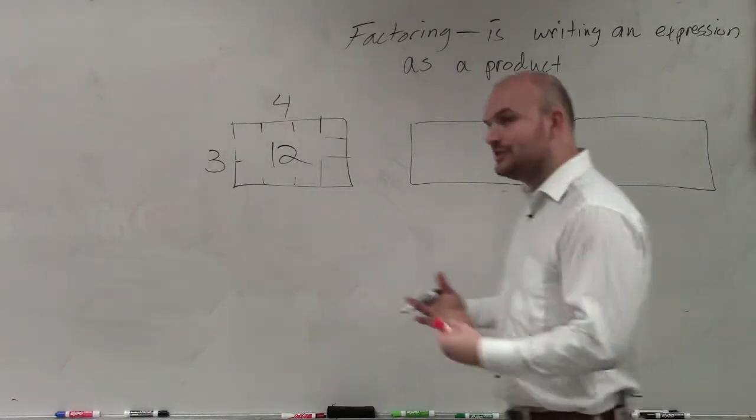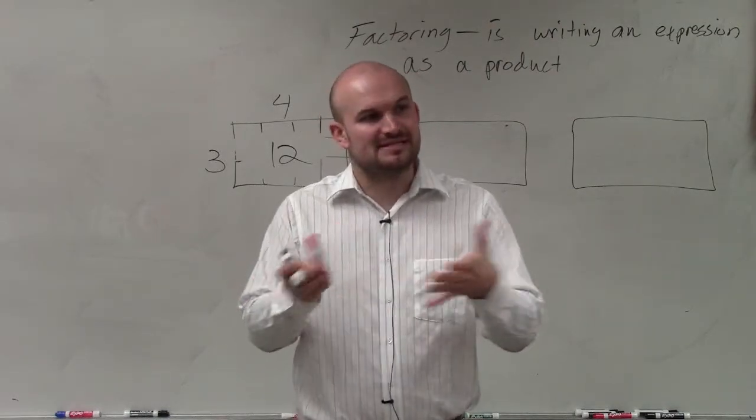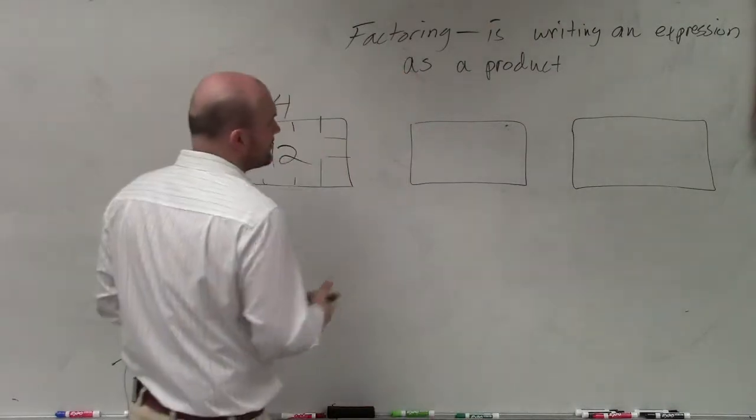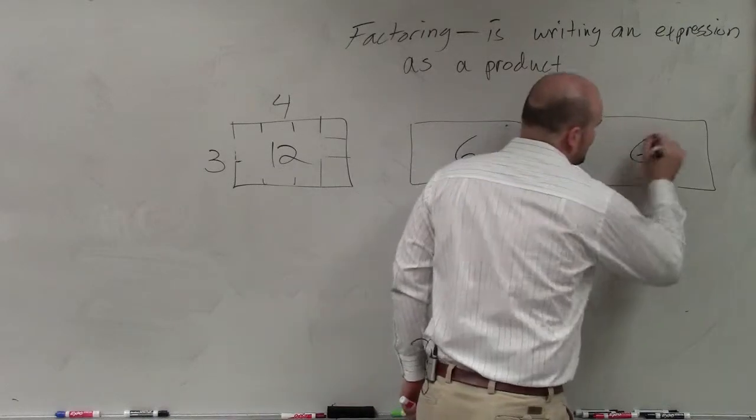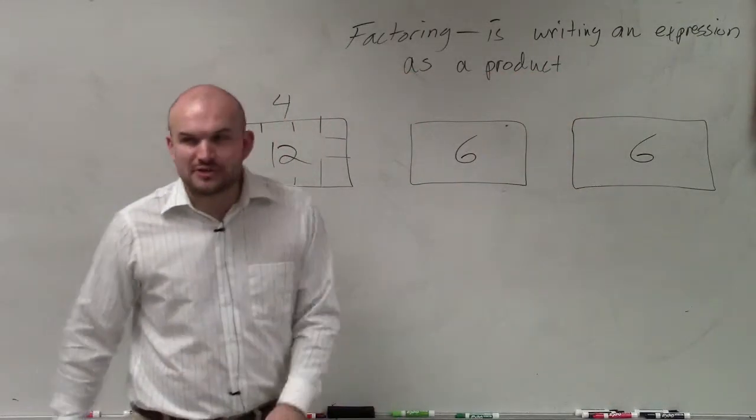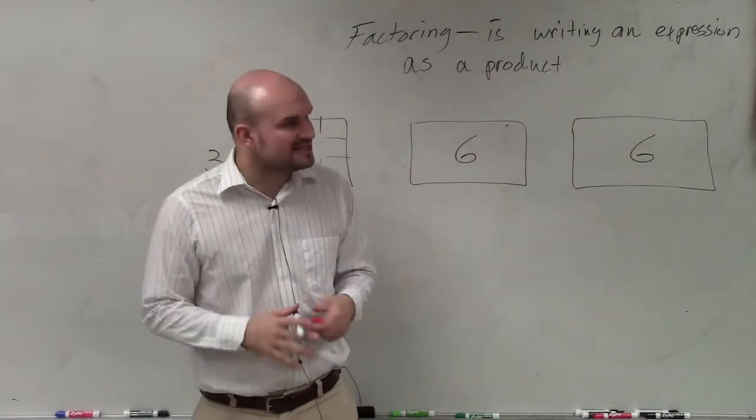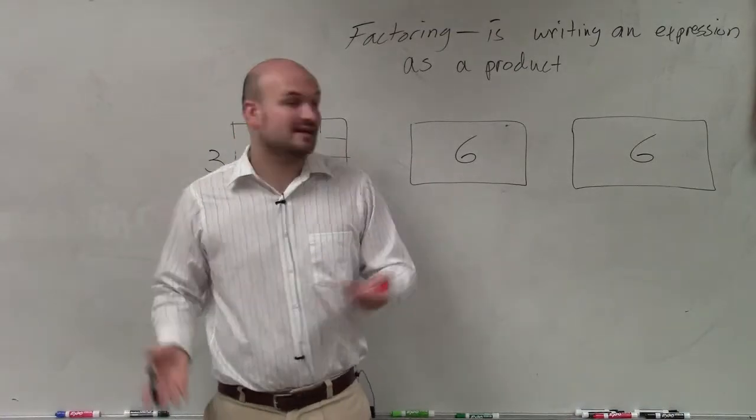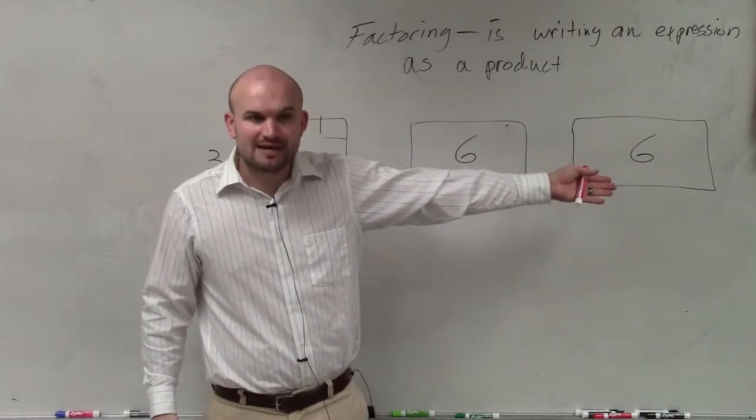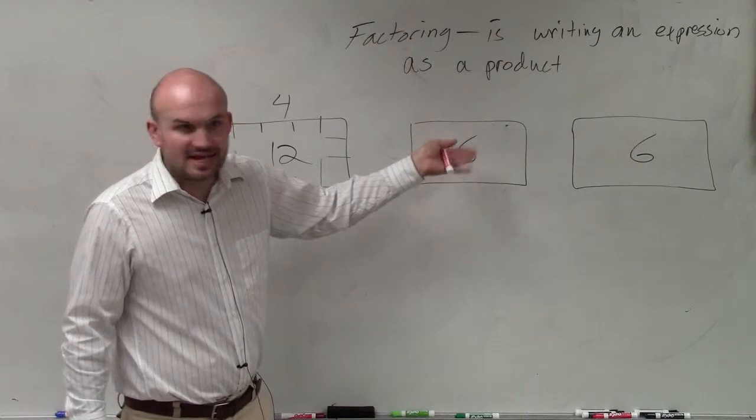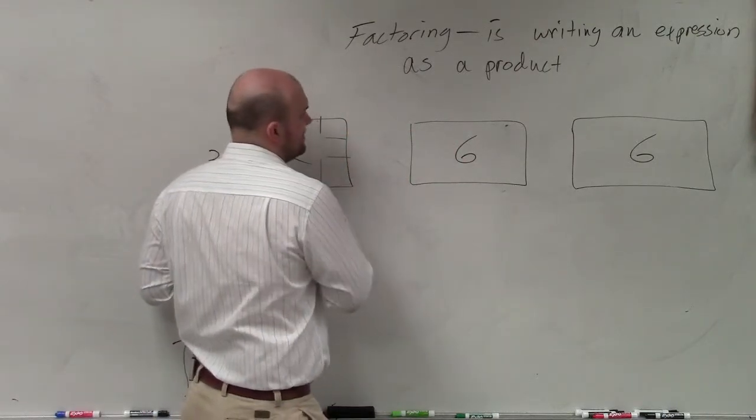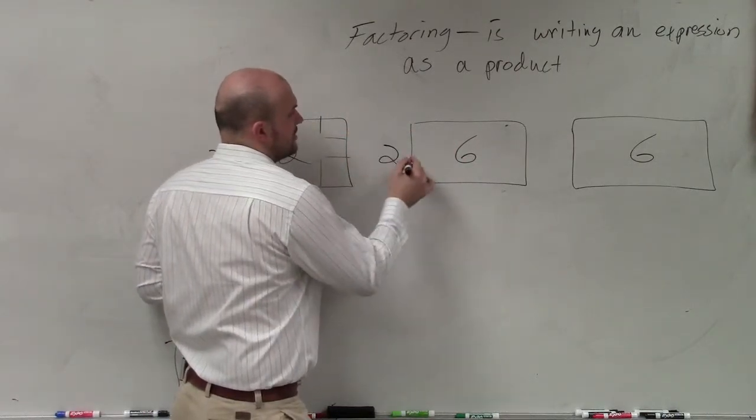So when factoring is basically doing is like the opposite of that. Basically, what I'm going to do is now I'm going to give you an area. And now what I want you guys to do is tell me what are going to be the side lengths or what are some possible side lengths for these two boxes. So if I say the area is 6, then one possible length, Deja, could be